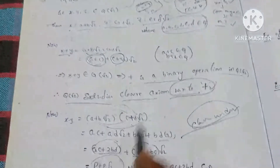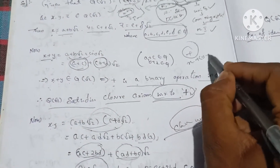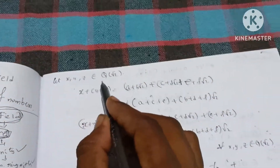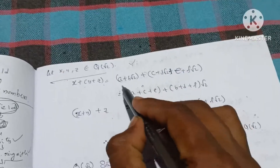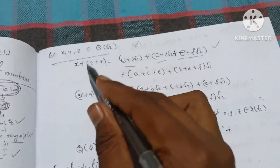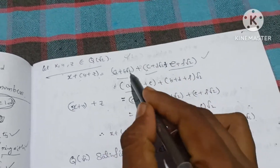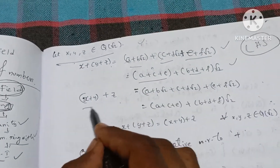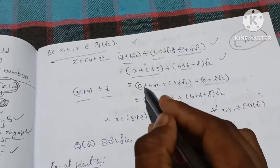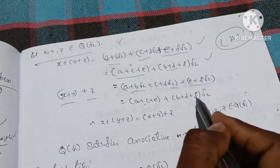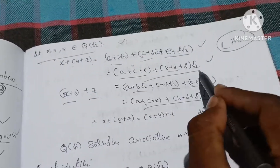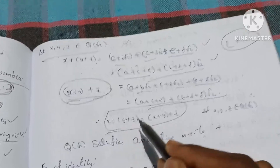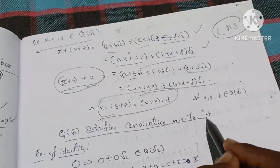Next, associativity under addition. Let x, y, z belong to Q(√2). Then (x plus y) plus z equals (a plus b root 2 plus c plus d root 2) plus (e plus f root 2), giving (a plus c plus e) plus (b plus d plus f) root 2. The right-hand side x plus (y plus z) gives the same values. Therefore (x plus y) plus z equals x plus (y plus z). Q(√2) satisfies the associative law with respect to addition.